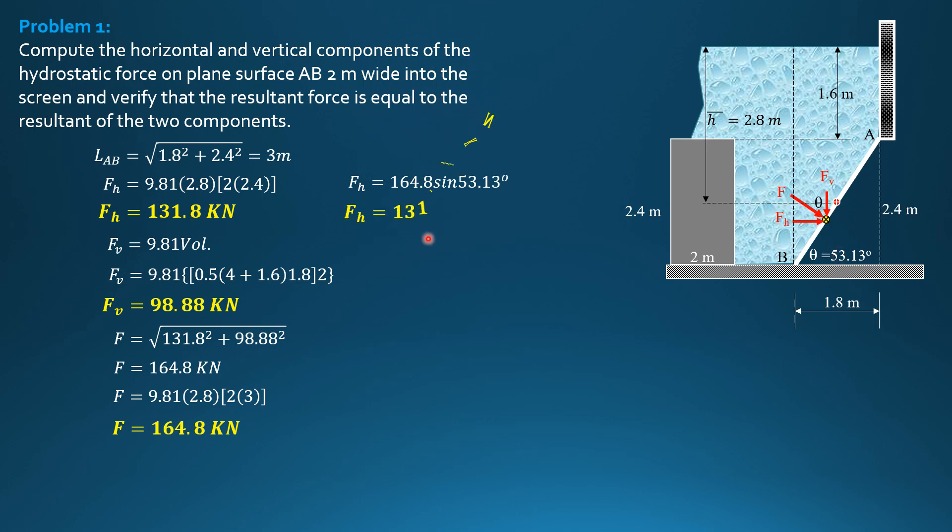So FH is 131.8, and FV is 164.8 cosine of 53.13. So I'm just using the principle so that you will have alternate ways of computing the horizontal and vertical components of the fluid pressure on curved surfaces. So that's it.